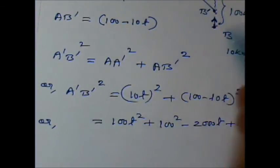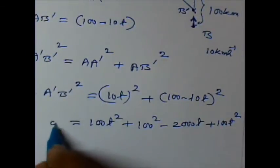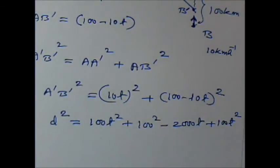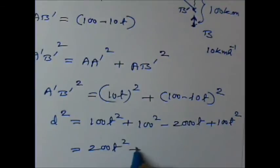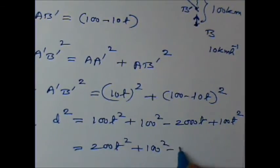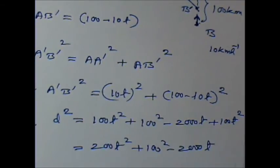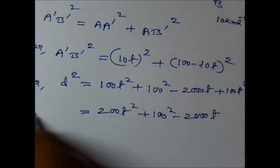So if I call the distance between them as D, I can say this is D squared. Now I can simplify it further. It becomes 200T squared plus 100 squared minus 2000T. This is D squared.